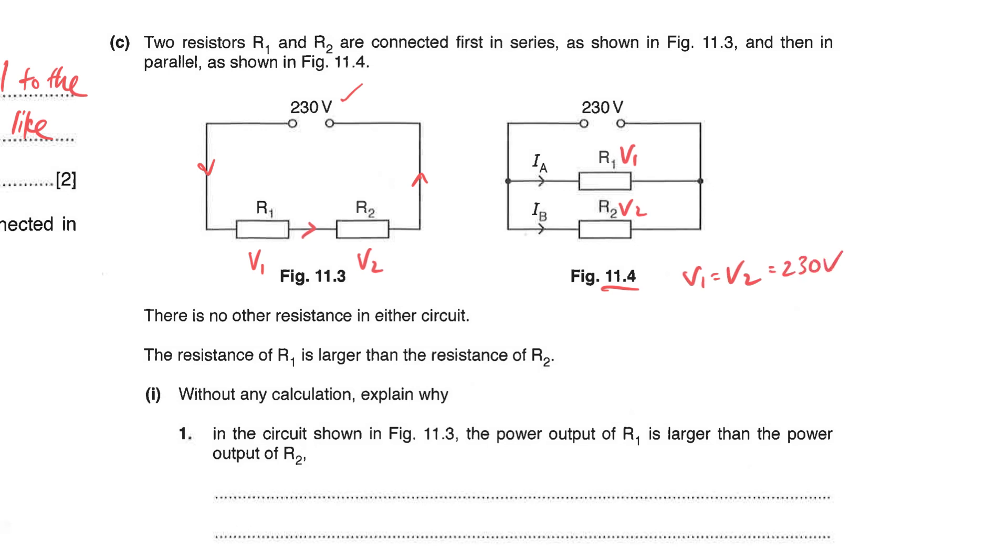For 11.4 is a parallel circuit. You know that your V1 and your V2 they are the same, which happens to be 230 volt. The current IA plus your IB that will be equals to your main current. So for this case V1 plus V2 that will be your 230 volt and the current is constant.